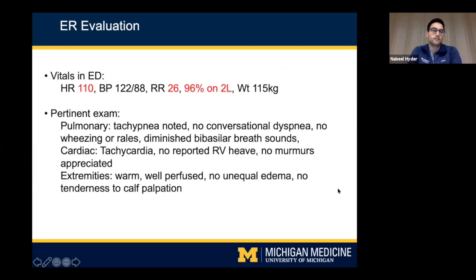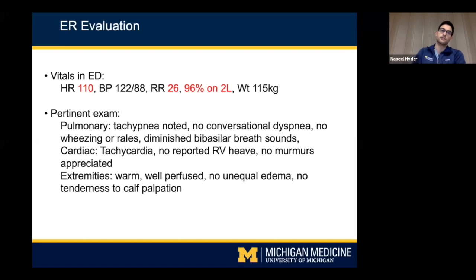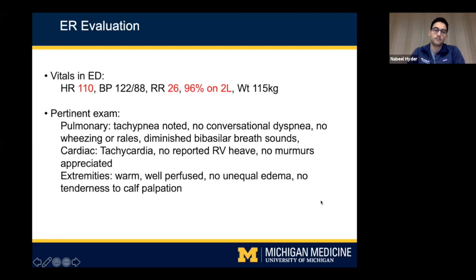In the ER, he was noted to be tachycardic to 110, blood pressure 122 over 88, tachypneic to 26, and hypoxic — requiring two liters of nasal cannula to saturate at 96%. On examination, he was tachypneic but had no conversational dyspnea. No significant lung sounds were noted. His cardiac exam showed tachycardia but no other significant cardiac findings. On his extremities, he was warm and well-perfused with no signs of DVT.